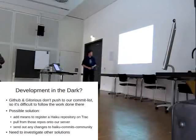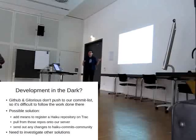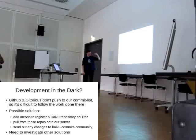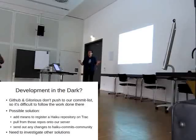We could use Trac or a bug tracker and add an attribute where every Trac user can register one or more GitHub repositories, and we would automatically pull from those repositories to see what has changed. Then introduce a new commits mailing list — like a group commits community — and send out any community changes, external changes, to that list.